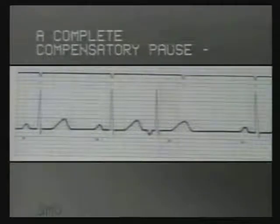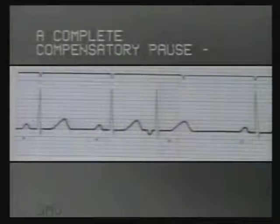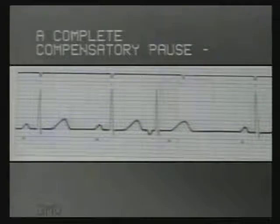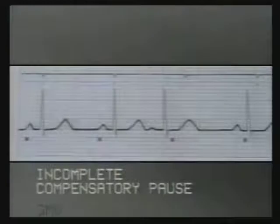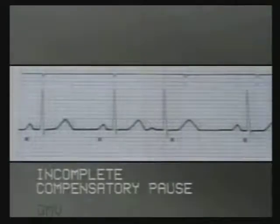Observe this tracing carefully. The red spots mark the expected occurrence of P waves and the black line at the top marks the expected occurrence of the R waves, that is, if the sinus rhythm was undisturbed. You will note that the beat after the premature beat has occurred exactly where it should have occurred — so this is a complete compensatory pause. In contrast, in this tracing, the beat after the premature beat has occurred before the next expected beat, so this is an incomplete compensatory pause.